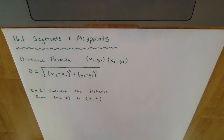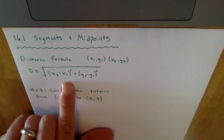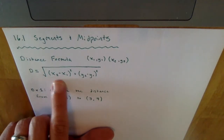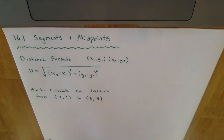If you haven't printed out these note sheets, which are available on Google Classroom, pause the video and jot down this formula. The distance between two points is given by the square root of (x2 minus x1) squared plus (y2 minus y1) squared. We'll jump into an example to see how this formula works.